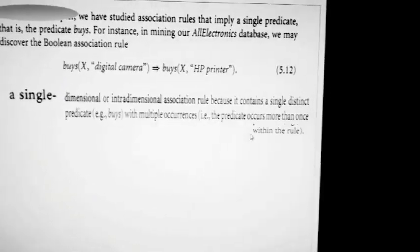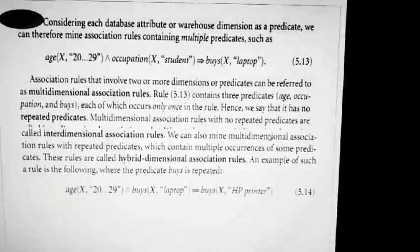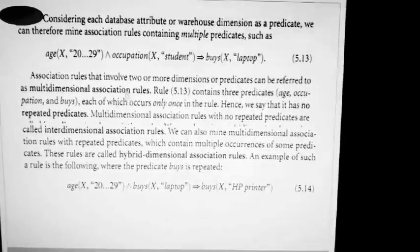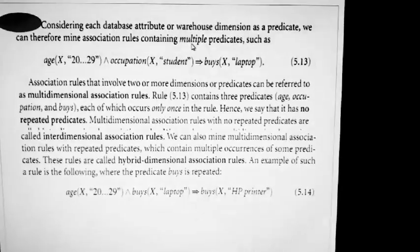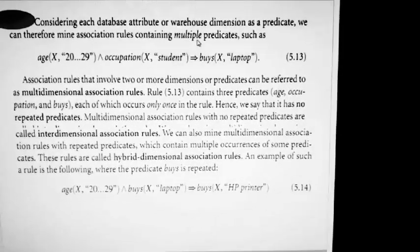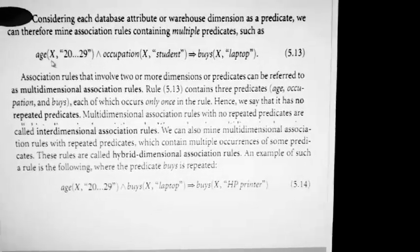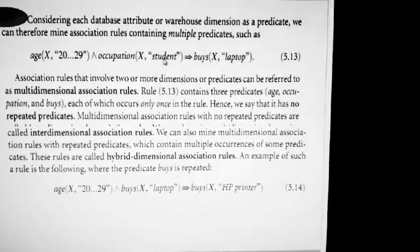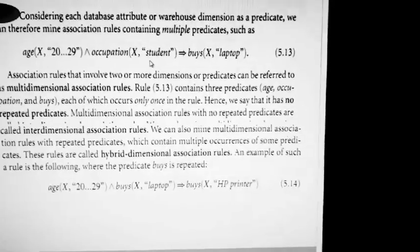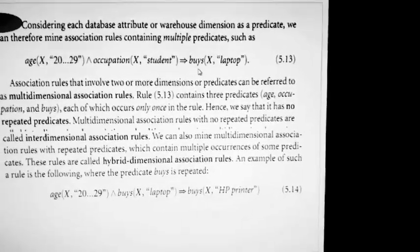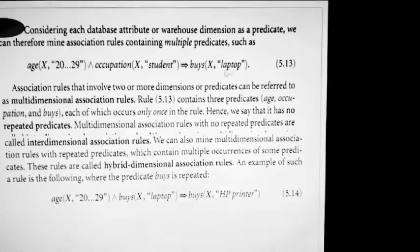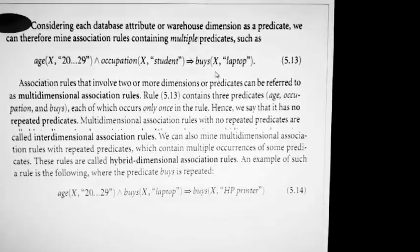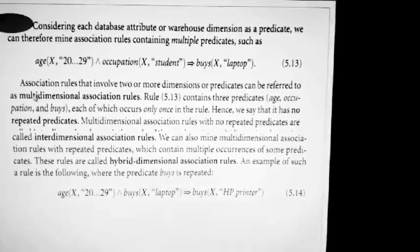The next category is multi-dimensional, called so because there will be more than one predicate. For example: age is in this range and occupation is in this range implies buys laptop. Counting the predicates — age, occupation, and buys — there are more than one, hence it is called a multi-dimensional association rule.